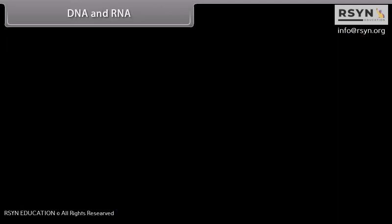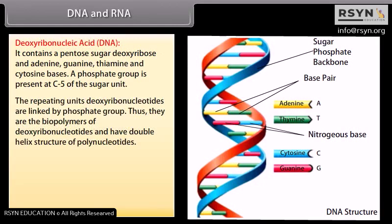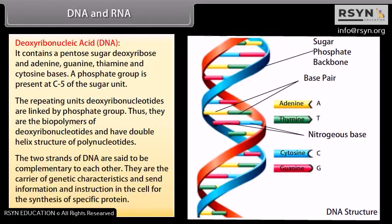DNA contains a pentose sugar deoxyribose and the bases adenine, guanine, thymine, and cytosine. A phosphate group is present at C5 of the sugar unit. The repeating units of deoxyribonucleotides are linked by phosphate groups, forming biopolymers of deoxyribonucleotides with a double helix structure. The two strands of DNA are complementary to each other. They are the carriers of genetic characteristics and send information and instructions to the cell for the synthesis of specific proteins.